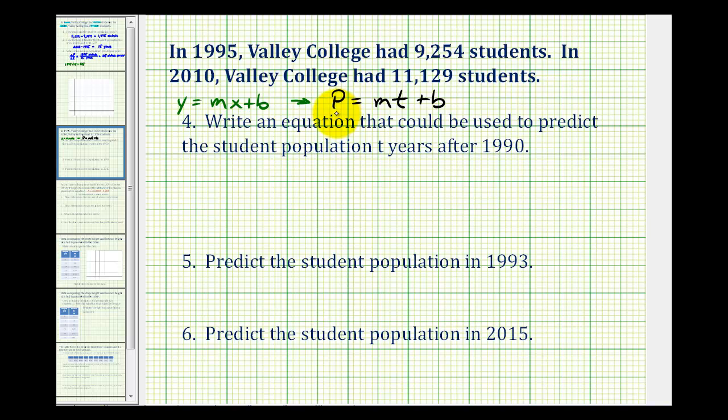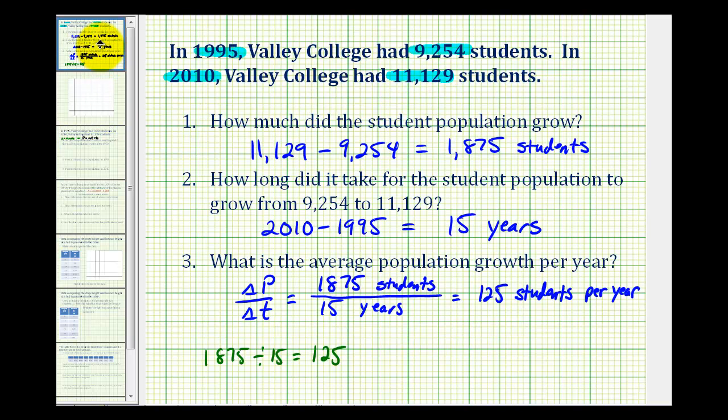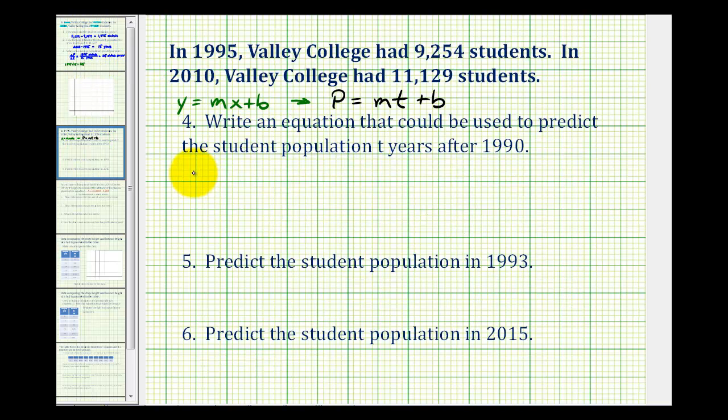So our equation will be in the form of p equals m times t plus b, where m is the slope and b is the y-intercept. Notice from the previous slide, the average population growth per year would be the slope of that line, so our slope is going to be equal to 125. So we already know that p is going to be equal to 125t plus b.